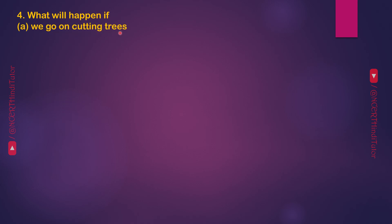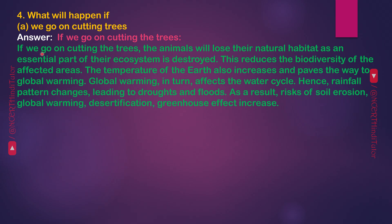Question 4: What will happen if we go on cutting trees? If we go on cutting the trees, the animals will lose their natural habitat as an essential part of their ecosystem is destroyed. This reduces the biodiversity of the affected areas. The temperature of the earth also increases, paving the way to global warming, which in turn affects the water cycle. Rainfall pattern changes, leading to droughts and floods. Risks of soil erosion, global warming, desertification and greenhouse effect increase.